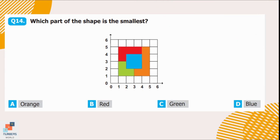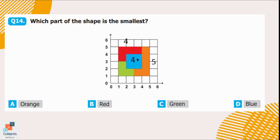Question number 14. Which part of the shape is smallest? We count the number of squares taken by each shape. The orange shape takes 5 squares. The red shape takes 4 squares. The blue shape also covers 4 squares. The green shape covers 3 squares. So the green shape is the smallest of all — option C.